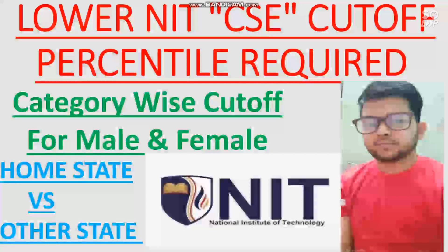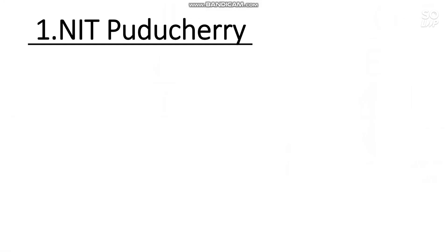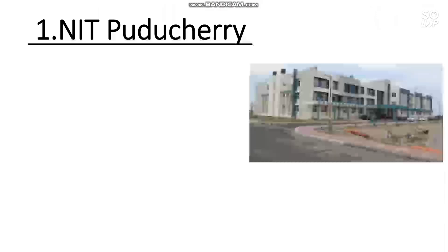Let's start the video. The first NIT is NIT Puducherry. I am considering 10 NITs which have the lowest possible cutoff for the CS branch. I will discuss category-wise — that is OBC, SC, ST, EWS, and General — so all types of cutoffs will be discussed for male, female, home state, and other state.